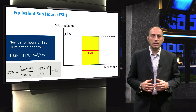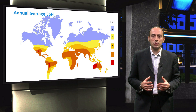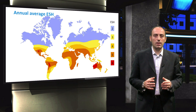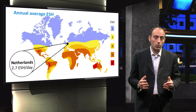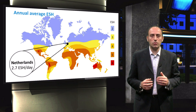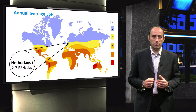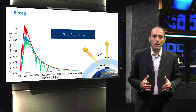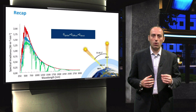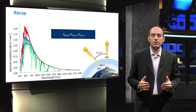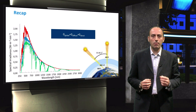In this last slide, the insolation in terms of annual average ESH is shown. Five regions can be distinguished and are highlighted with different colors. In the Netherlands, the annual average equivalent sun hours per day is 2.7. So, depending on the position on Earth and the position of the Sun in the sky, terrestrial solar radiation varies both in intensity and in spectral distribution. To conclude, today we have seen the Sun's spectrum at different air masses, divided the global irradiance into two components — direct and diffuse — and saw how to measure them by means of pyranometers.